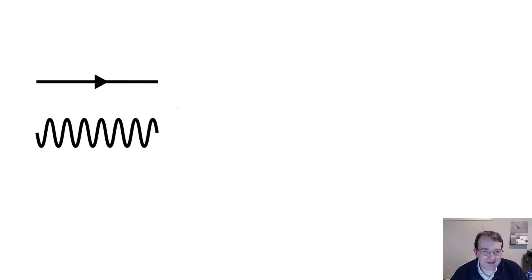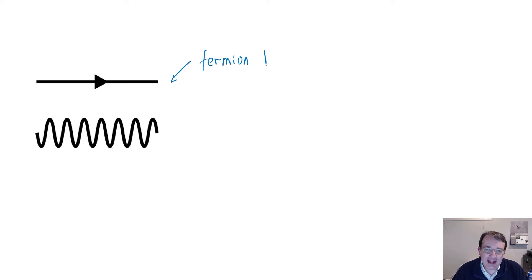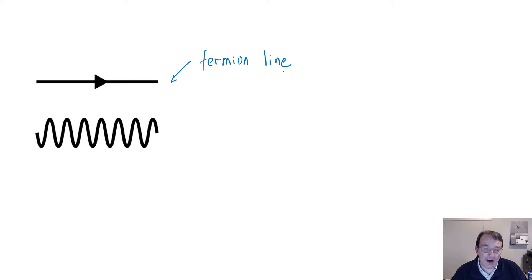Let's have a look at how to draw Feynman diagrams for quantum electrodynamics, the electromagnetic force. Feynman diagrams consist of lines and vertices, and for quantum electrodynamics we have two types of lines. The first is called a fermion line, which represents a fermion — fermions being leptons like the electron or muon, or quarks such as the up, down, strange, and so on.